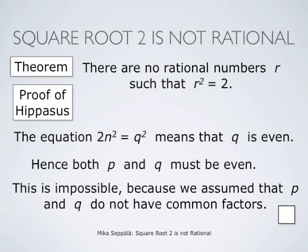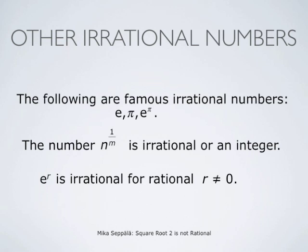This completes the proof of Hipasus. So, we have shown that square root of 2 is not a rational number. Other famous irrational numbers are the mathematical constants e, pi, and also e to the power pi. If n is a positive integer and m an integer other than 0, then n to the power 1 divided by m — that is, the mth root of n — is either an irrational number or an integer. Also, e to the power r is irrational for any rational r different from 0. These are just some examples of irrational numbers.